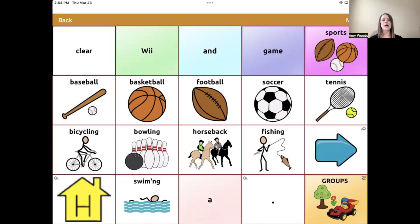Considerations for grid size is largely based on an individual's ability to visually see and access buttons by touching with a hand, finger, stylus, or other access methods such as switch or head tracker.